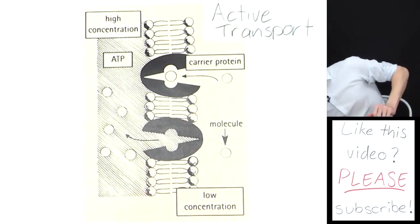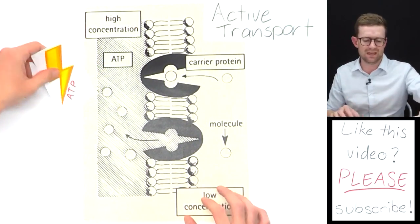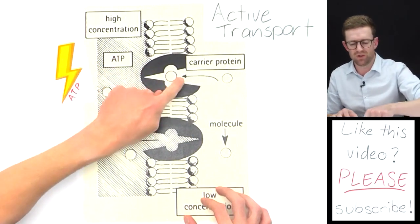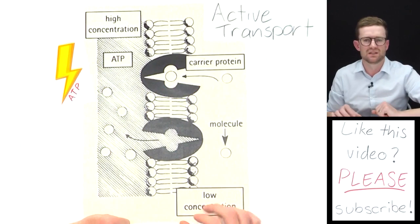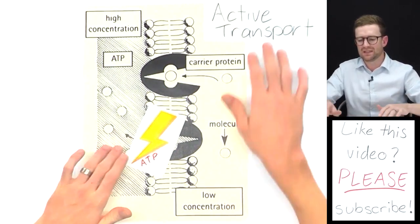ATP is written here because it's the energy being provided to help actively pump this substance against the concentration gradient. So that's active transport.